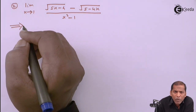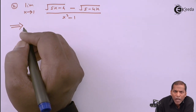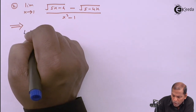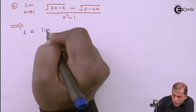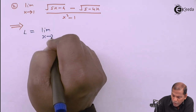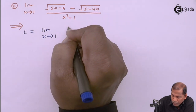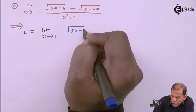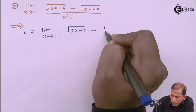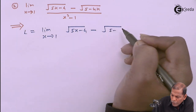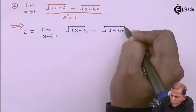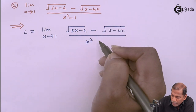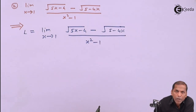First of all, we denote the given problem as L. So L equals limit x tends to 1 of square root of (5x minus 4) minus square root of (5 minus 4x), whole divided by x squared minus 1.